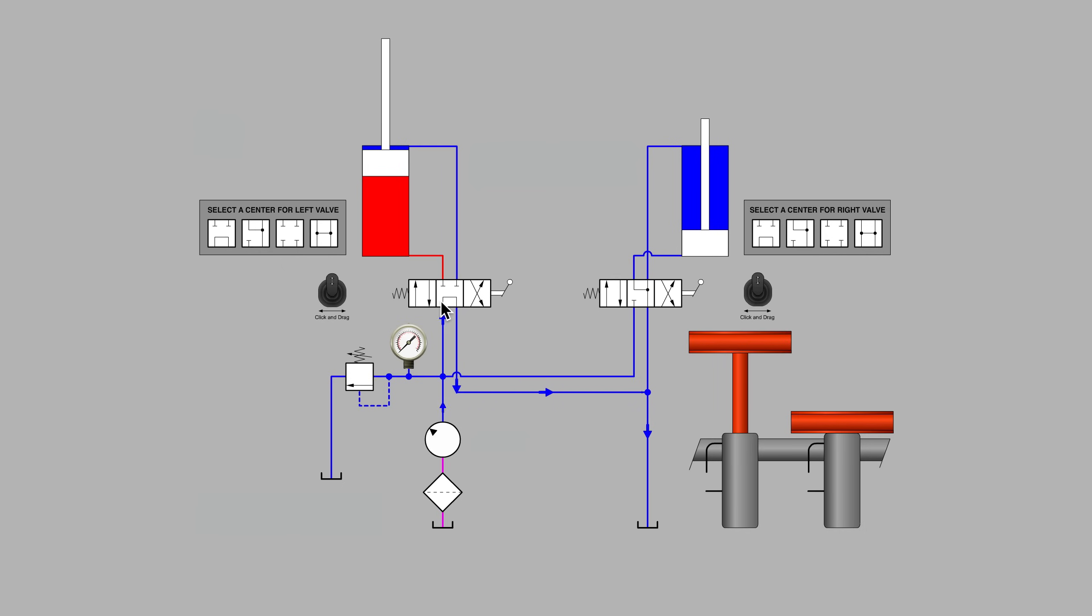And our pump is unloaded back to tank whenever the valves are in their neutral position, center position. But what about the valve on the right and the cylinder on the right? Are we able to raise that cylinder? No, we cannot because once again, we have that leakage path through the valve on the left hand side.